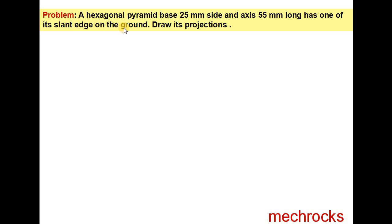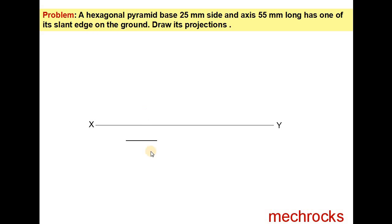Take the HP. In the HP we will get the top view. First you draw the XY line. Next you draw one reference line. They are given one slant edge on the ground. When one slant edge is on the ground, first you take the reference line of length 2.5 cm. Then you draw one more side at an angle of 120 degrees.